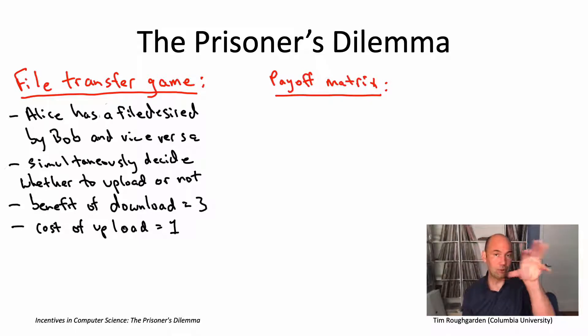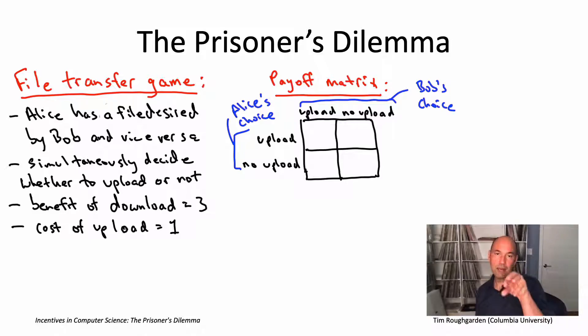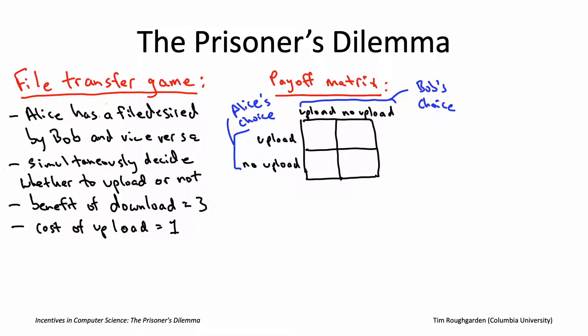Now we can summarize all of this information using what's called a payoff matrix. So this is just going to be a table, two-dimensional table. There'll be two rows and two columns corresponding to Alice's two strategies of upload or not, and Bob's two strategies of upload or not. That'll give us four outcomes, depending on what Alice and Bob decide to do. And then in each of those entries of this two-by-two grid, we're going to have a pair of numbers. The first one specifying the overall payoff to Alice. The second one specifying the overall payoff to Bob.